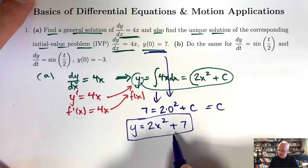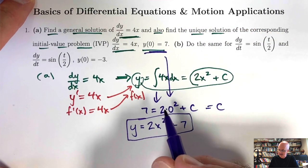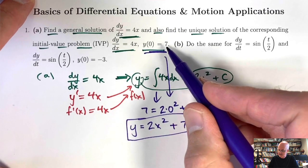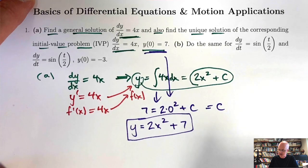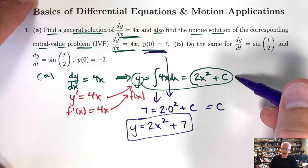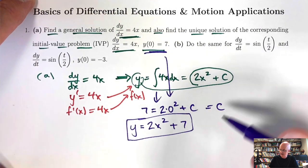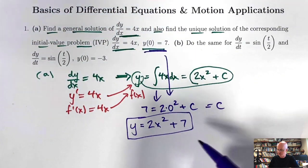Our unique solution of the initial value problem takes the general solution and replaces c with 7, to get y = 2x² + 7. This function has a derivative always equal to 4x, and when x is 0, the output is 7. So it satisfies the initial value problem. The general solution represents infinitely many functions; the unique solution for an initial value problem represents just one function.